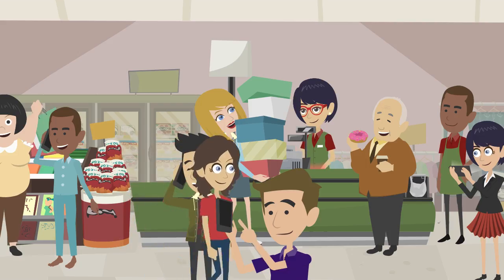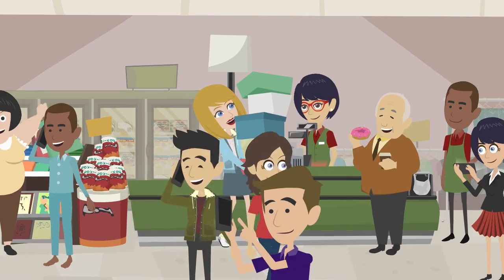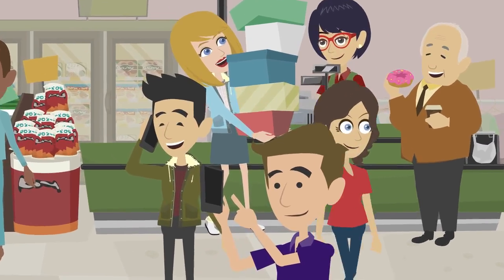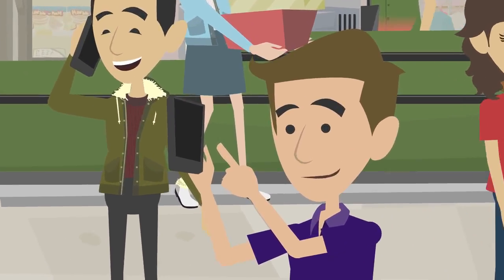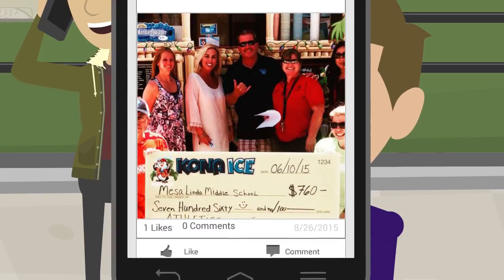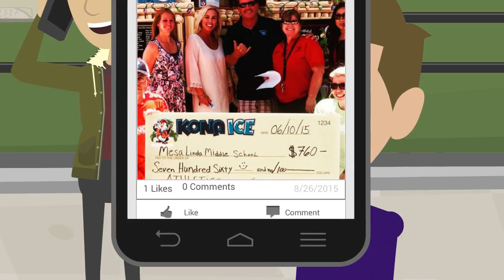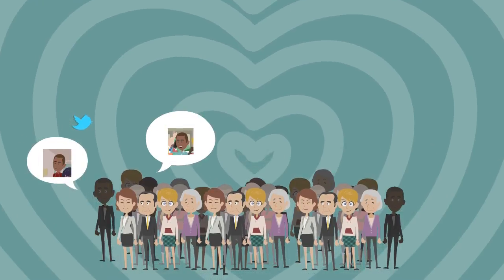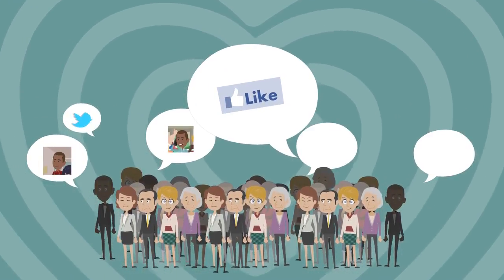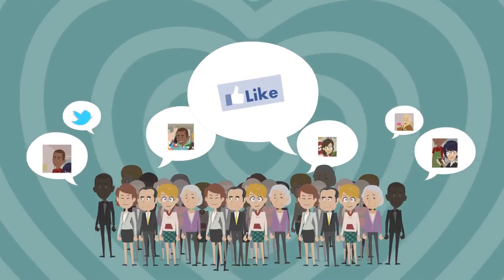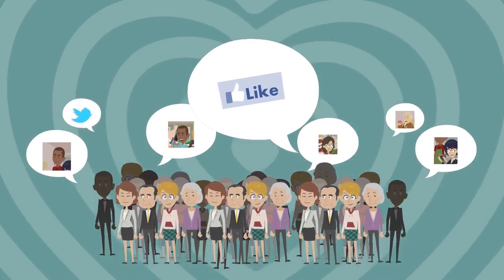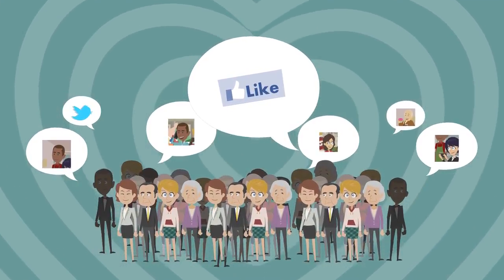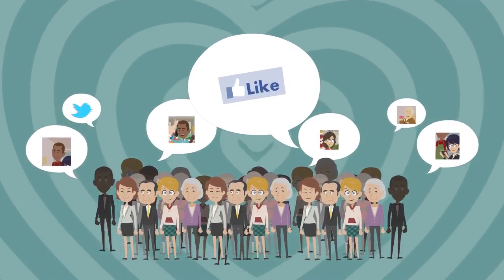When members attend Bob's event, they can comment on and like each other's posts in the members-only community feed and spread the word to their friends, reaching twice the audience that Bob could reach on his own.